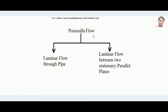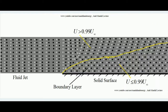We will not derive the equations; instead we will learn the final expressions which are important for competitive exams and university examinations. Laminar flow is a kind of flow in which layers of fluid flow over each other in a well-defined, ordered fashion.